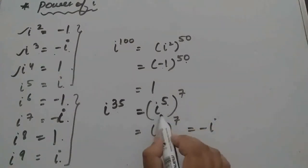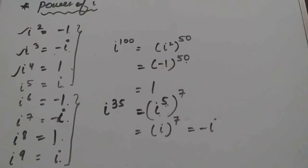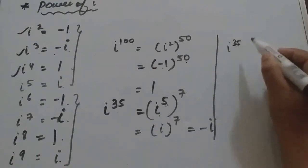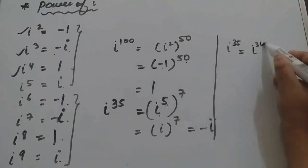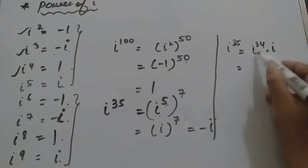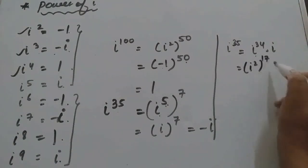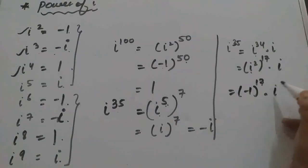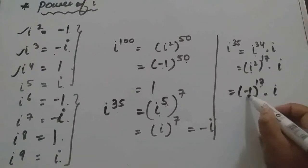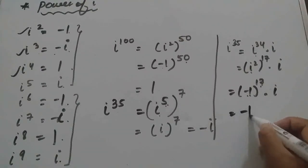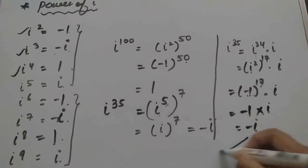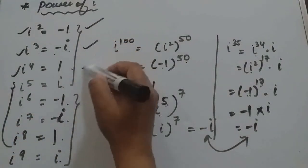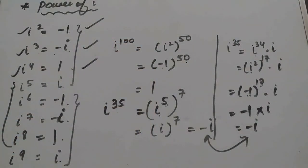Alternatively, for i to the power 35, split odd power into even: write i to the power 34 times i, then i to the power 34 equals i squared to the power 17 equals minus 1 to the power 17. Since the power is odd, the answer is negative: minus 1 times i gives minus i. So only the first three values of i need to be remembered.